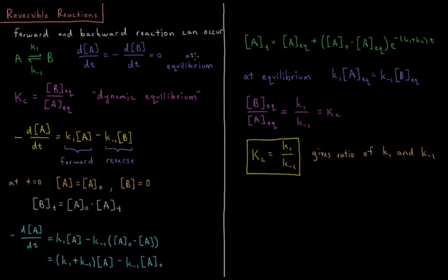At equilibrium, the change in concentration of species A over time is equal to the negative change in concentration of species B with respect to time, and both are equal to zero. We say that we have achieved a dynamic equilibrium where the concentration of B divided by the concentration of A equals our equilibrium constant.